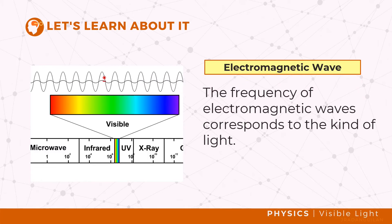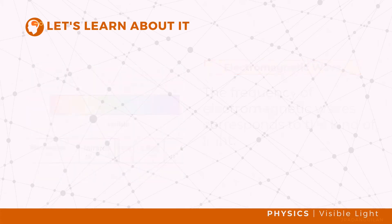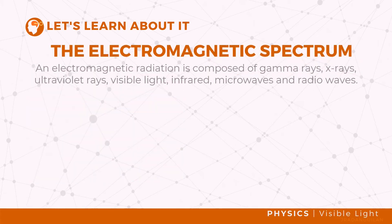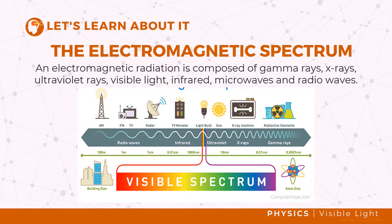The frequency of electromagnetic waves corresponds to the kind of light, and this is characterized by the electromagnetic spectrum. The electromagnetic spectrum is a range of electromagnetic radiation arranged in terms of their frequency or wavelength. An electromagnetic radiation is composed of gamma rays, X-rays, ultraviolet rays, visible light, infrared, microwaves, and radio waves.